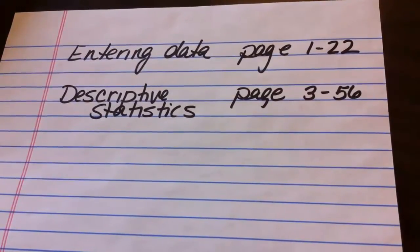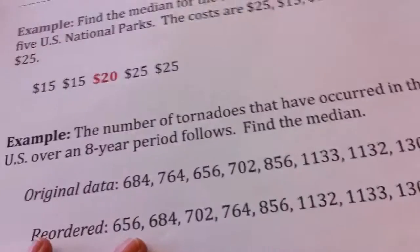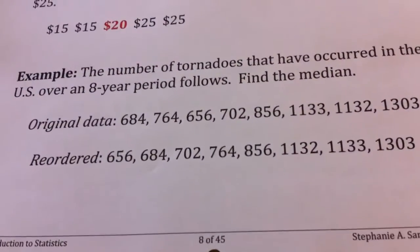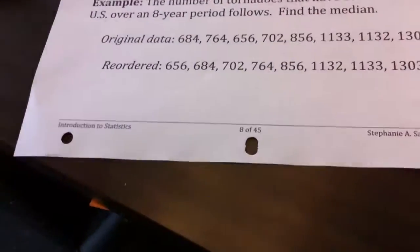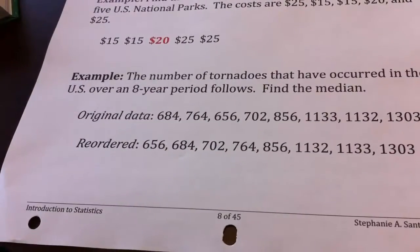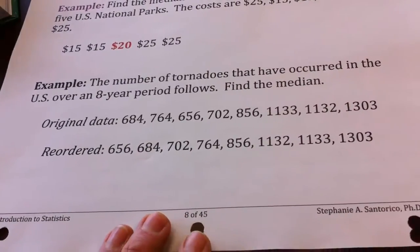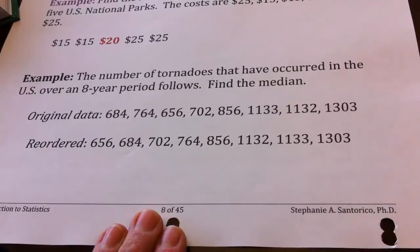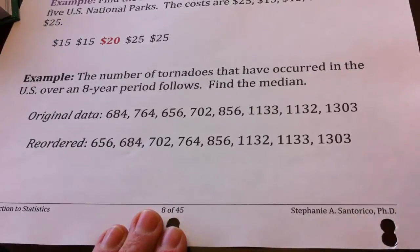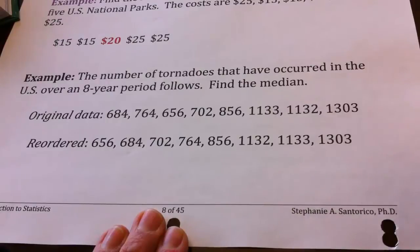In your text, you'll find a section on entering data into the TI-83 and TI-84 on page 122, and there's another section which is helpful on descriptive statistics on page 356. I'm going to take one of our examples from our notes, this was your tornado data coming out of page 8 in your chapter 3 notes. I want to enter it into our calculator and show you how to do that, then I'll step through how to get your descriptive statistics.